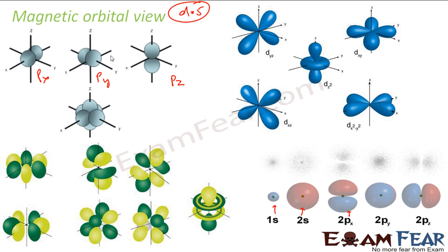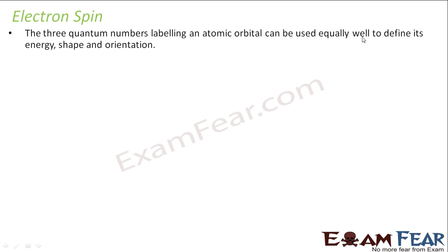There is something called electron spin as well. Each orbital will have 2 electrons — both are jumping around. Since there are 2 electrons, each may have a different spin. In fact both will have different spins — one clockwise and one anticlockwise — and that is denoted by the spin quantum number.